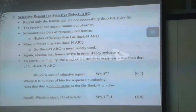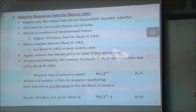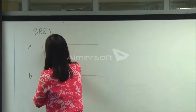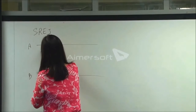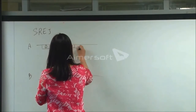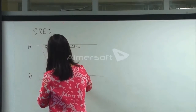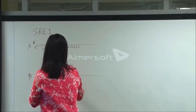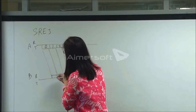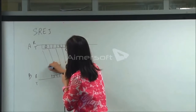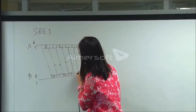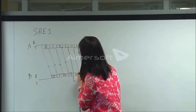Selective repeat, also called selective reject, is similar to go-back-N but different. When A sends frames 0, 1, 2, 3 and transmits them: suppose frames 0, 1, 2 are received correctly, but there is something wrong with frame number 3, and frames 4 and 5 have also been received correctly. At this point, the receiver sends a selective reject.